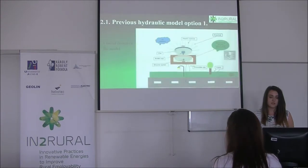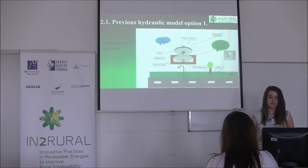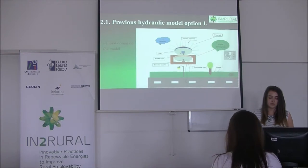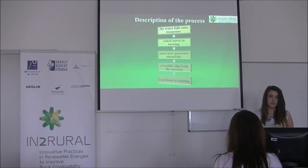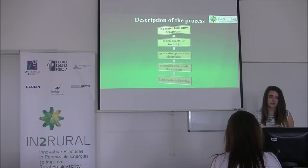The first preview is the hydraulic model. We can see the initial design of the model and which materials were used — for example, plastic stones, series, bottle cap, and decoration made from paper. The hydraulic model description of the process, or how does it work: the water falls onto teaspoons, the wheel starts turning, the generator generates electricity, crocodile clips lead the current, and a diode lights up.